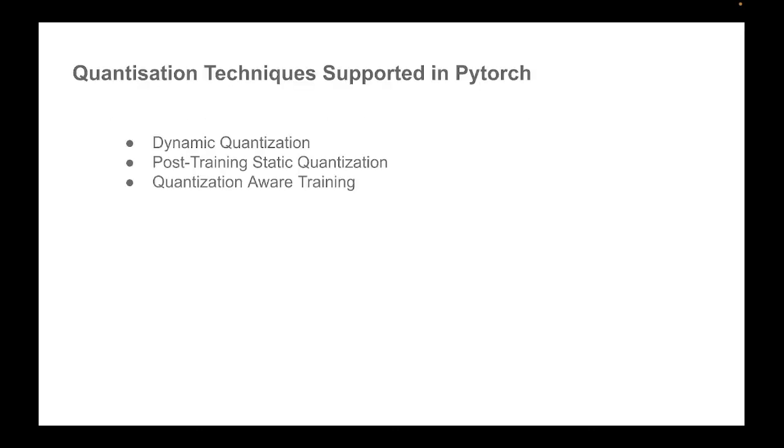So using some of these techniques as building blocks, there are different approaches that are supported in various frameworks. And mainly in PyTorch, we have three approaches. We have dynamic quantization, we have post-training static quantization, and then you have quantization aware training. So let's try to understand at a high level how these approaches differ from each other.